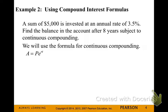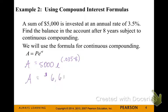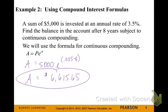A sum of $5,000 is invested at an annual rate of 3.5%. Find the balance in the account after 8 years, subject to continuous compounding. We'll use the PERT formula: amount equals principal times base e raised to the rate times time. So 5,000 times e raised to 0.035 times 8. The ending amount will be around $6,615.65. With money, if you're not told where to round, it always goes to the cents place — two decimal places.